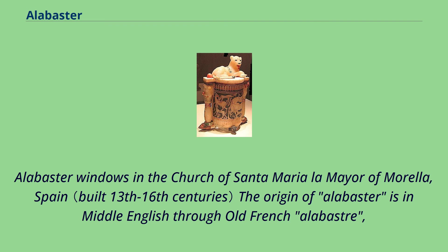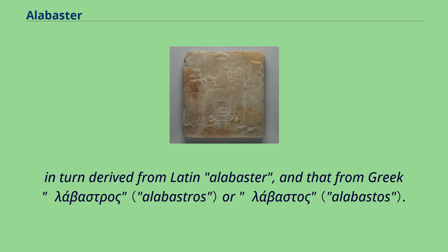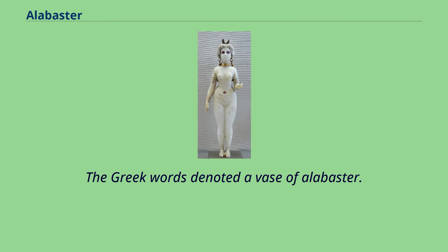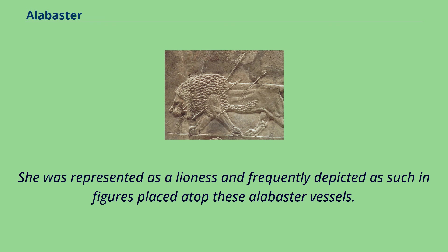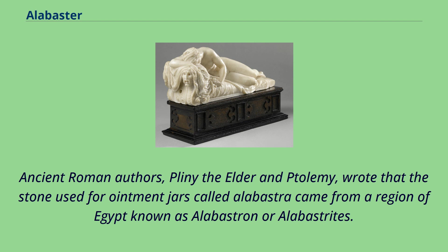Alabaster windows in the Church of Santa Maria la Mare of Morella, Spain. The origin of alabaster is in Middle English through Old French, in turn derived from Latin alabaster, and that from Greek alabastros or alabastos. The Greek words denoted a vase of alabaster. The name may be derived further from ancient Egyptian alabaste, which refers to vessels of the Egyptian goddess Bast. She was represented as a lioness and frequently depicted as such in figures placed atop these alabaster vessels. Ancient Roman authors Pliny the Elder and Ptolemy wrote that the stone used for ointment jars called alabastra came from a region of Egypt known as alabastron or alabasterites.